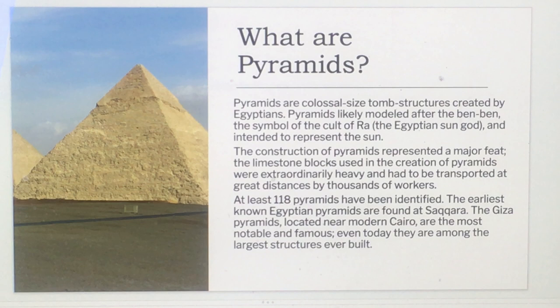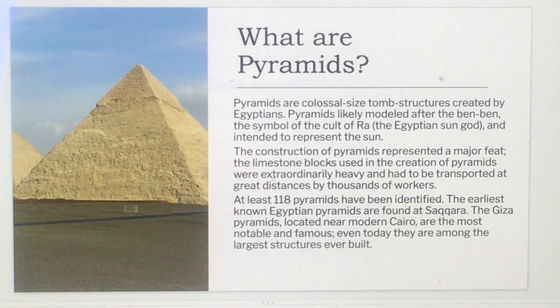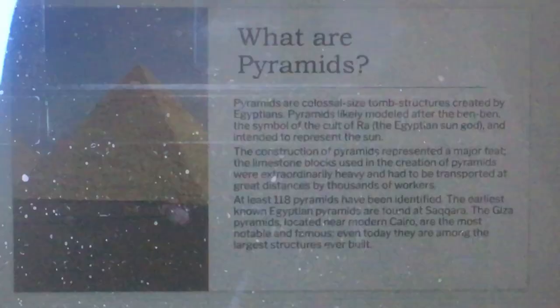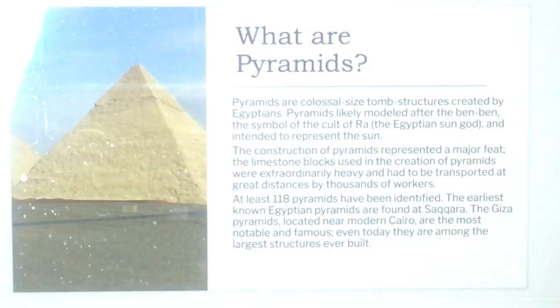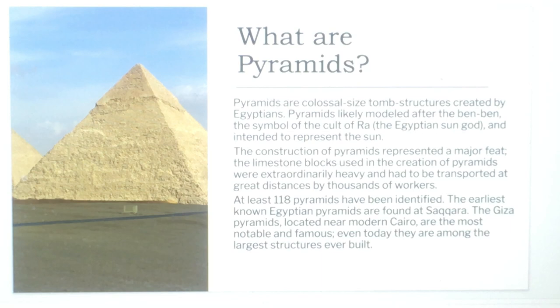The Ben Ben is a symbol of the cult of Ra, the Egyptian sun god — some people pronounce that 'Ray,' so you'll hear both Ra and Ray — and intended to represent the sun. The construction of pyramids represented a major feat; the limestone blocks used were extraordinarily heavy and had to be transported great distances by thousands of workers.